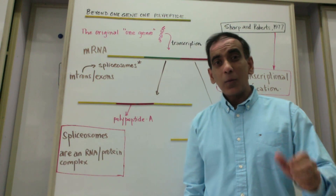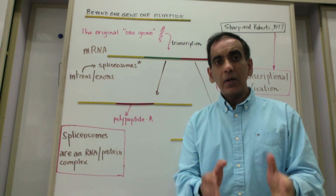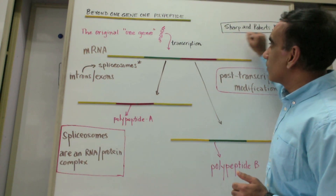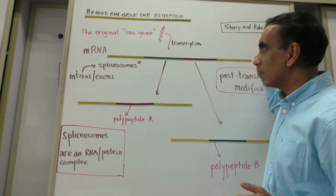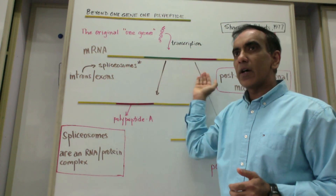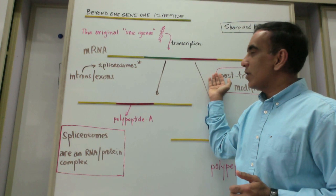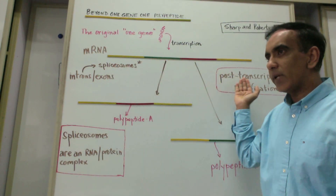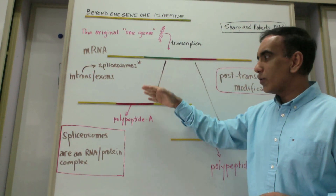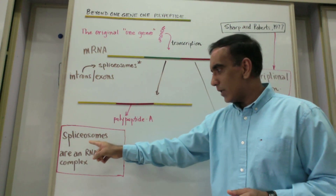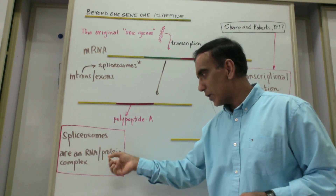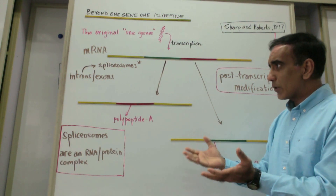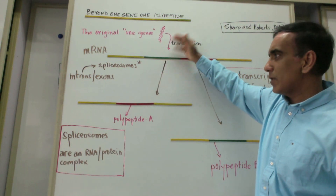In time, the one gene one polypeptide hypothesis also proved to be inadequate. It was Sharp and Roberts in 1977 who proposed that messenger RNA, transcribed from one gene and entering the cytoplasm, can undergo changes brought about by structures called spliceosomes — tiny complexes of RNA and proteins — which can remove certain sections of messenger RNA called introns.